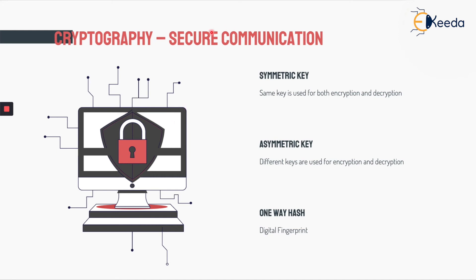Cryptography is a way of secure communication, and we have three types of cryptography. The first is called symmetric key cryptography, the second is asymmetric key cryptography, and the third is called one-way hash or keyless cryptography. We'll look at each of these in detail to understand what cryptography is all about and how it helps blockchain.